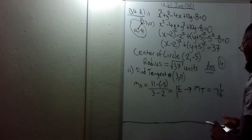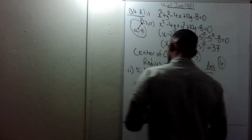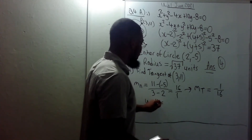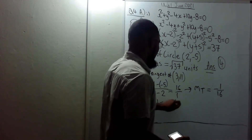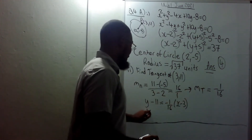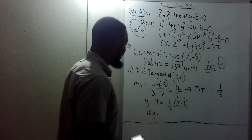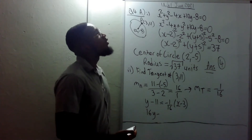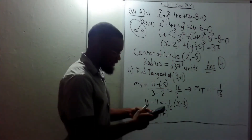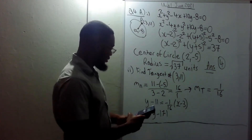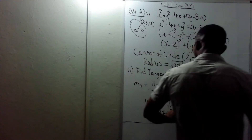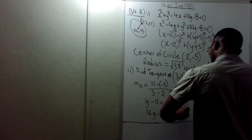Since this is the gradient of the tangent, the equation of the tangent at (3, 11) is: y minus 11 equals negative 1 over 16 times (x minus 3). Multiplying through by 16 gives: 16y minus 176 equals negative x plus 3.